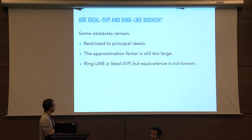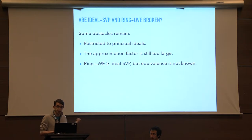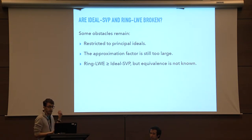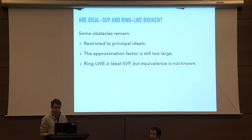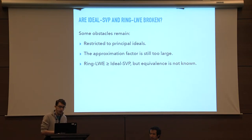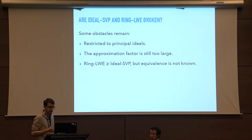Some obstacles remain before we actually break ideal SVP and ring LWE. The first is that what I've just presented is restricted to principal ideals, whereas we would like it to work for arbitrary ideals. The second restriction is that the approximation factor is a bit too large — we'd like to really break the crypto using a polynomial approximation. And the last limitation is that ideal SVP reduces to ring LWE, but the converse is not known to be true. So breaking ideal SVP will not be sufficient to really break ring LWE.